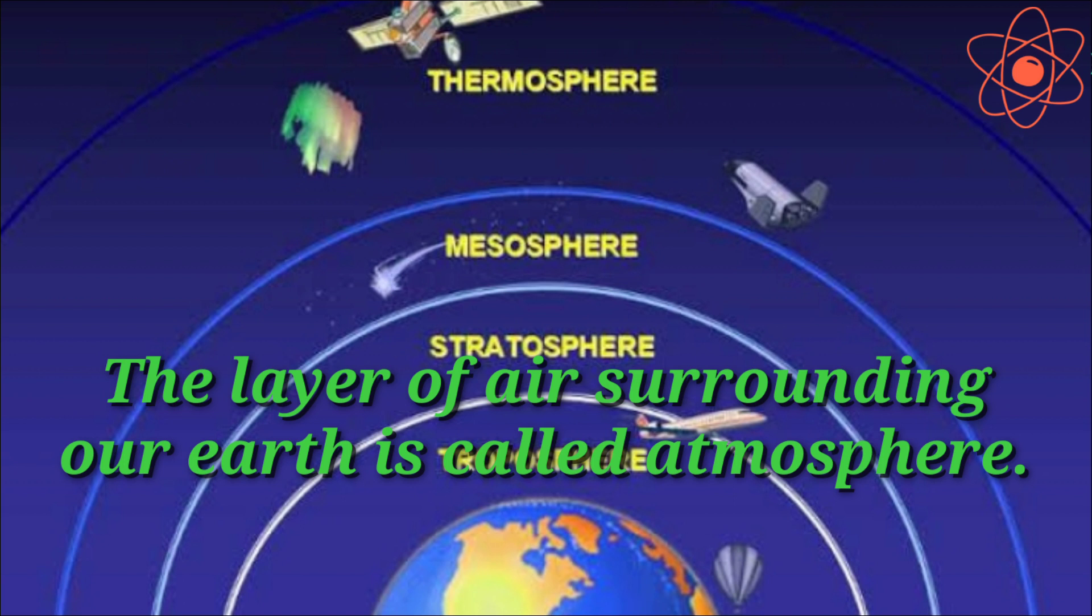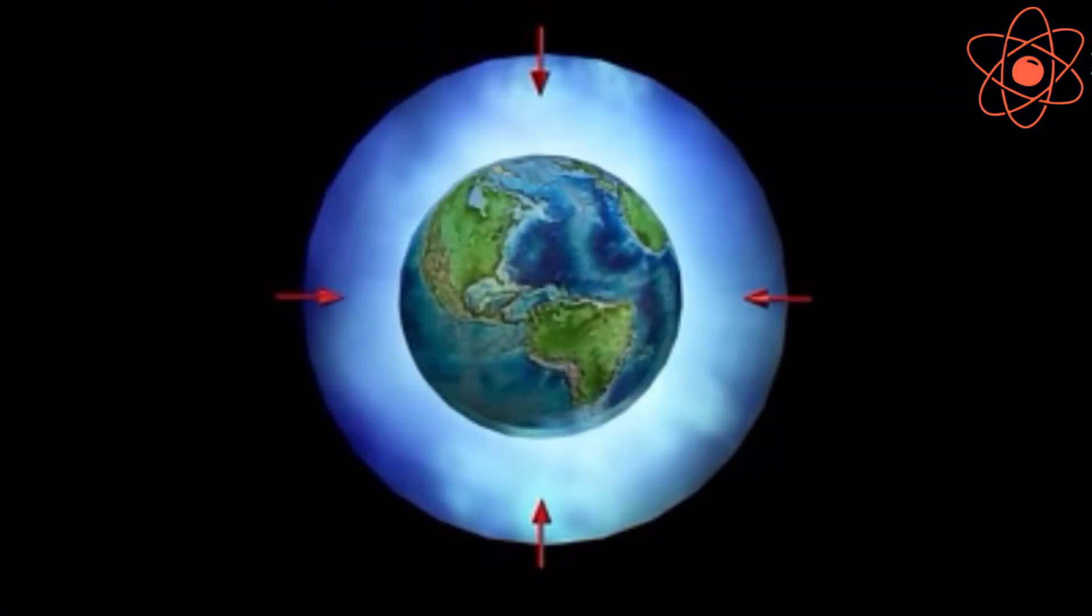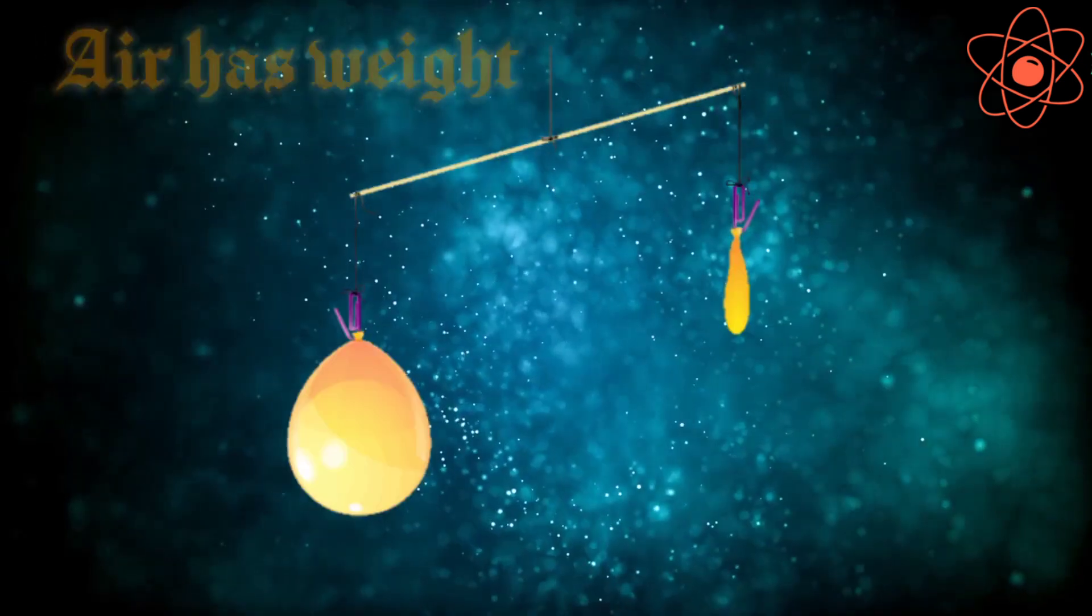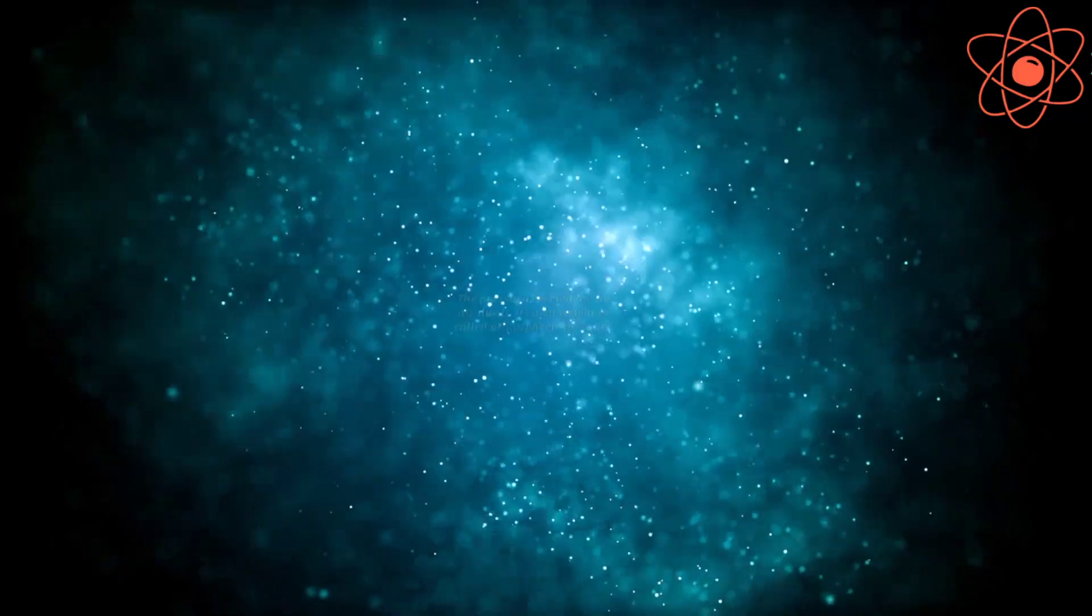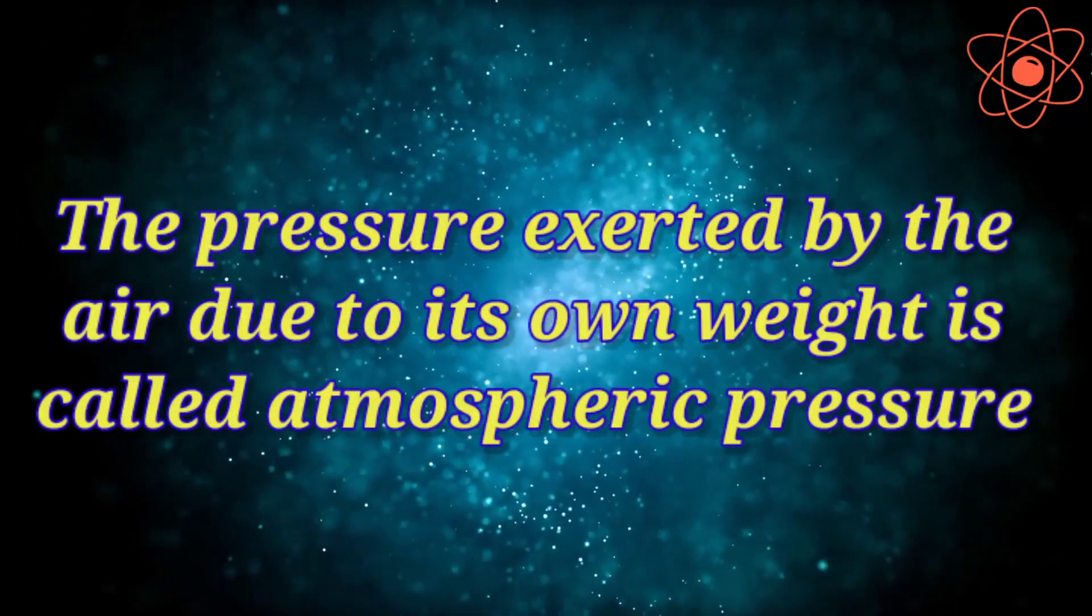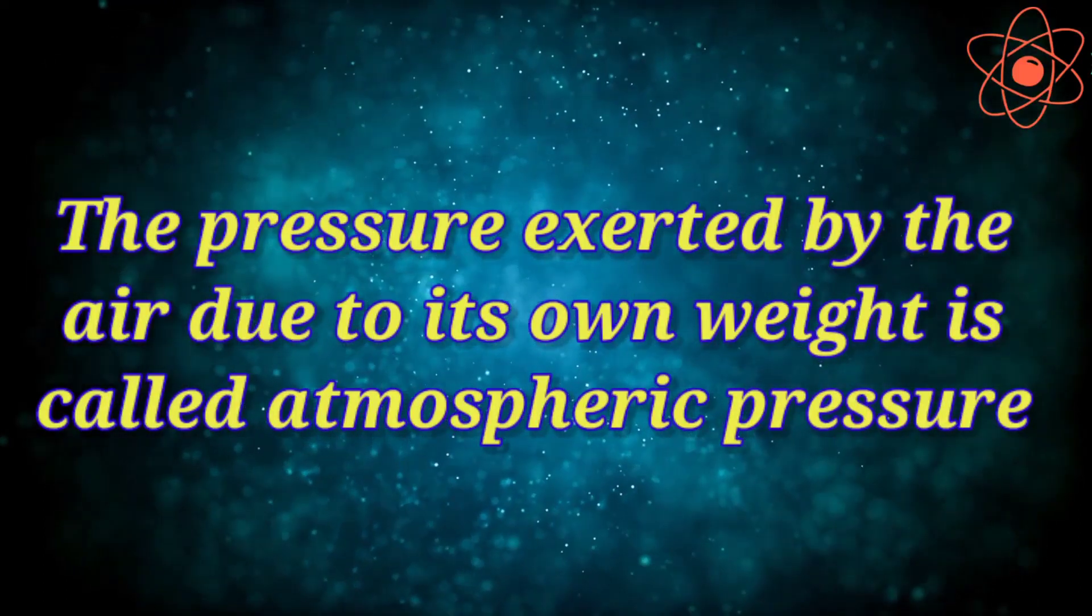The atmosphere extends up to several kilometers above the surface of the Earth. Air has weight, so it creates pressure on the objects below. The pressure exerted by the air due to its own weight is called atmospheric pressure.